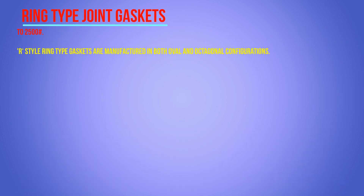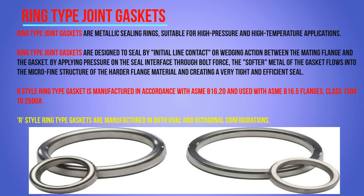RTJ flanges may have a raised face with ring grooves machined into it. Ring type joint gaskets are metallic sealing rings suitable for high pressure, high temperature applications. They are designed to seal by initial line contact or wedging action between the mating flanges and the gasket. By applying pressure on the sealing interface through bolt force, the softer metal of the gasket flows into the micro fine structure of the harder flange material, creating a very tight and efficient seal. The material of the gasket should be softer than the material of the flanges.